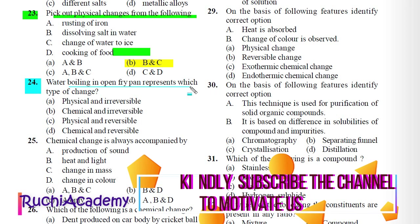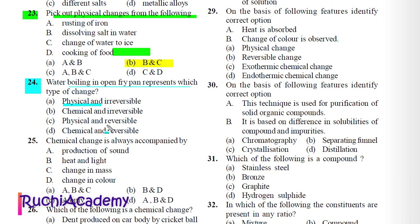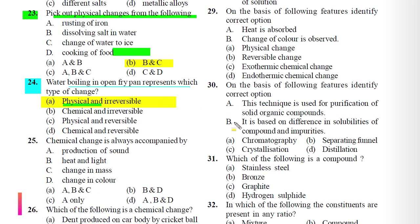Question 24: Water boiling in an open frying pan represents which type of change? A) Physical and irreversible change. Correct answer is A. Boiling water converts to steam, which is a physical change. But as the pan is open, the steam is lost into the atmosphere and cannot be condensed back to water; therefore the change is irreversible.